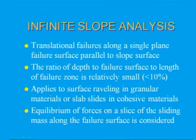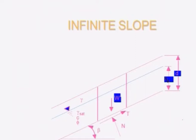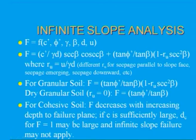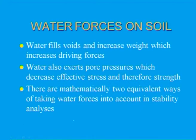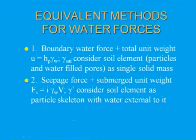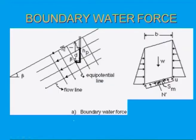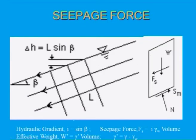There are two types of slopes: infinite slope analysis and finite slope analysis. We have finished the infinite slope analysis — it is a function of factor of safety for C, phi, gamma, beta, angle of slope, D, and U. For water forces on soil, there are two equivalent methods: Case 1 considers boundary water forces plus total unit weight; Case 2 considers seepage force plus submerged unit weight.